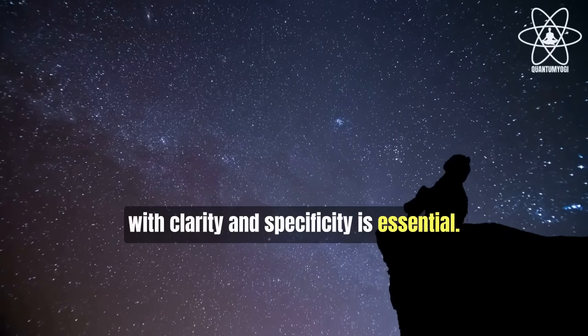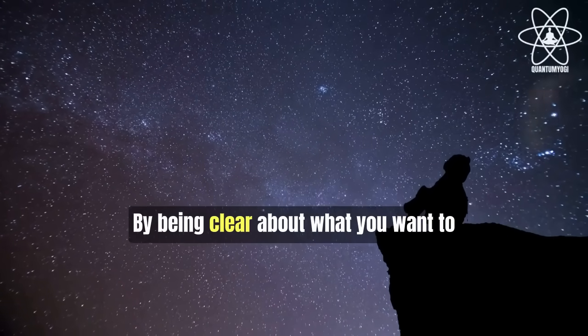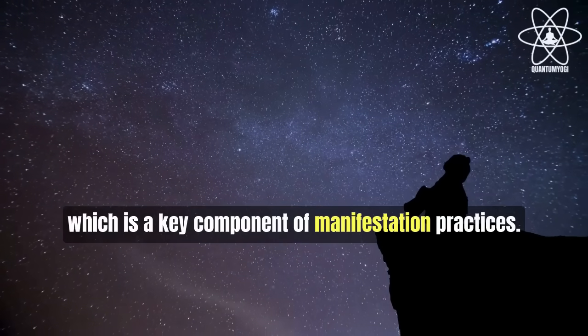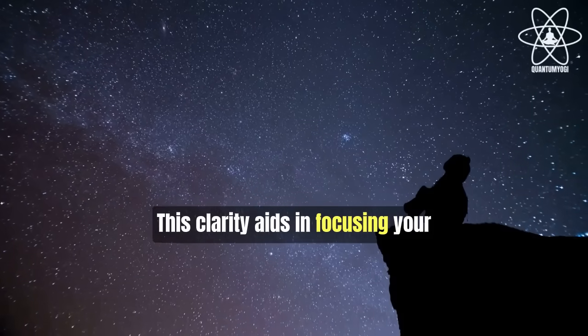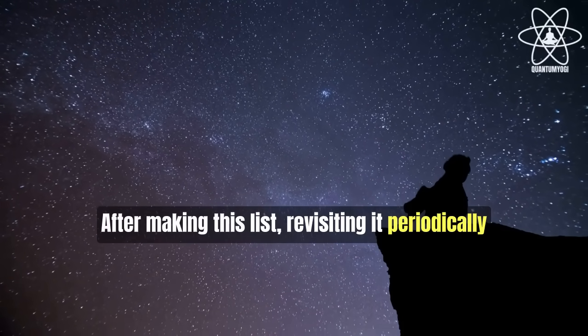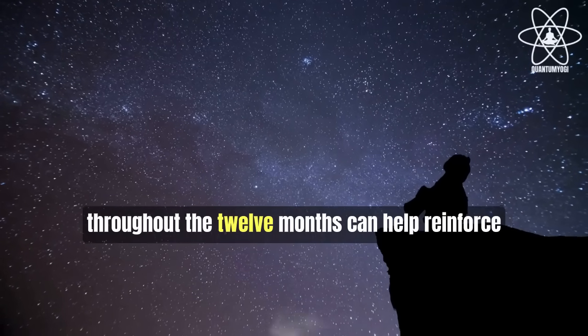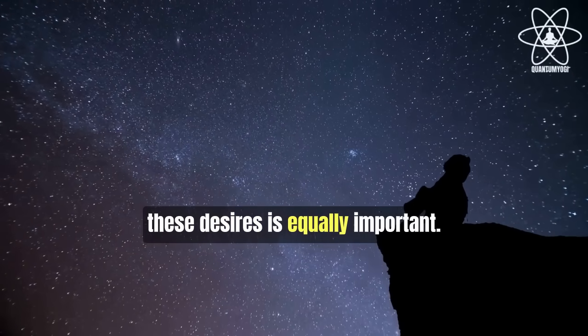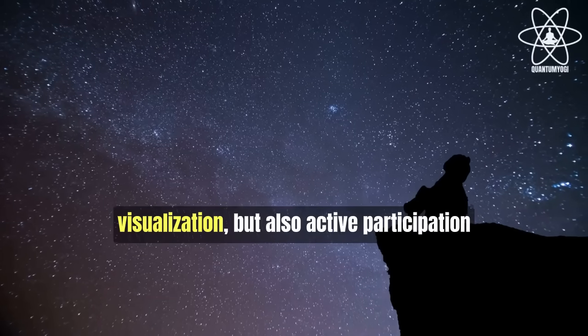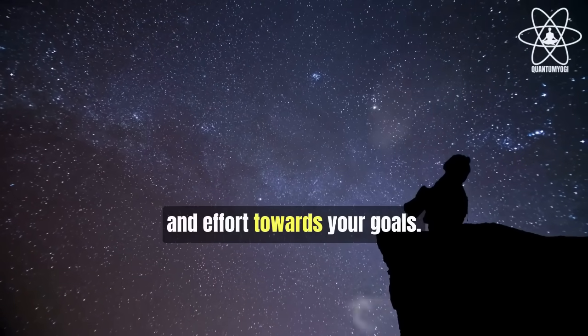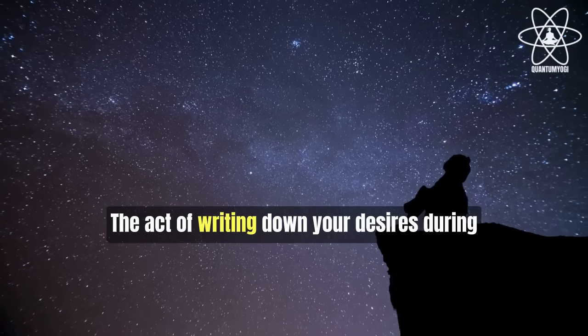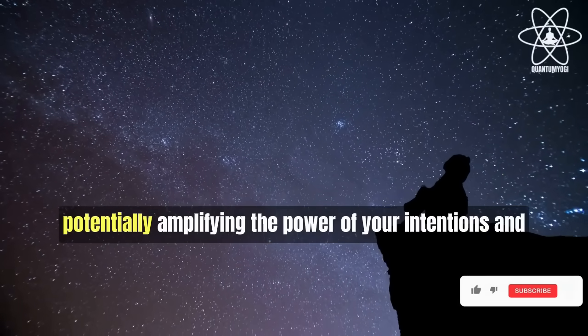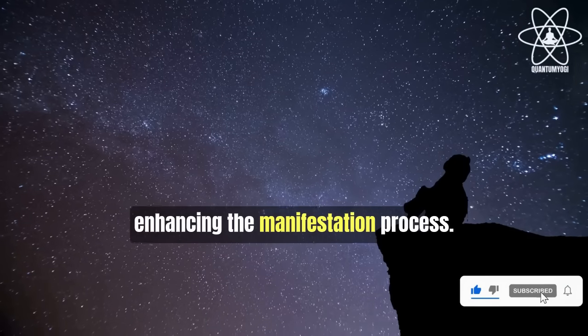Writing down these desires with clarity and specificity is essential. By being clear about what you want to manifest, you're engaging in the process of visualization, which is a key component of manifestation practices. This clarity aids in focusing your mind and energy towards these goals. After making this list, revisiting it periodically throughout the 12 months can help reinforce your commitment to these goals. Taking actionable steps towards achieving these desires is equally important. Manifestation often involves not just visualization, but also active participation and effort towards your goals. The act of writing down your desires during this 12-12 portal will align your intentions with the heightened spiritual energy of the day, thus potentially amplifying the power of your intentions and enhancing the manifestation process.